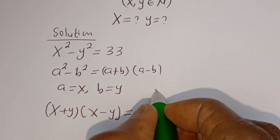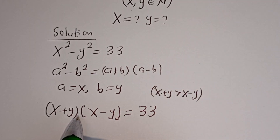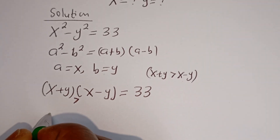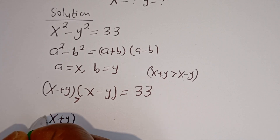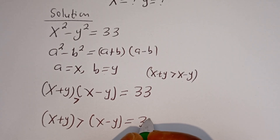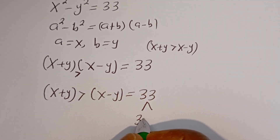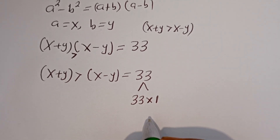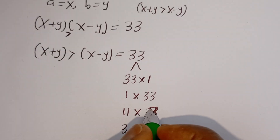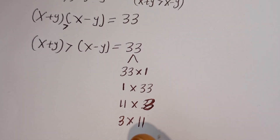But here, X plus Y is greater than X minus Y. Therefore, X plus Y is greater than X minus Y, and their product equals 33. Now, 33 is a product of 33 multiplied by 1, or 11 multiplied by 3.